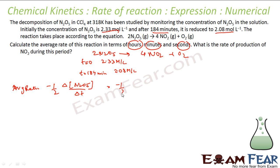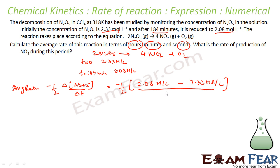Putting in the values: minus 1 by 2 times (2.08 − 2.33) moles per litre, divided by 184 minutes. This comes out to be 6.79 × 10⁻⁴ moles per litre per minute.